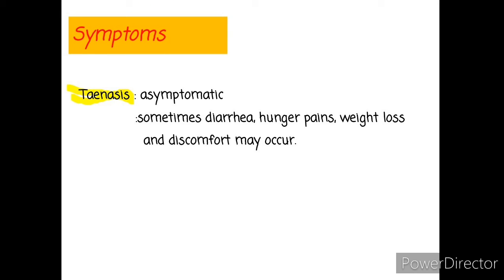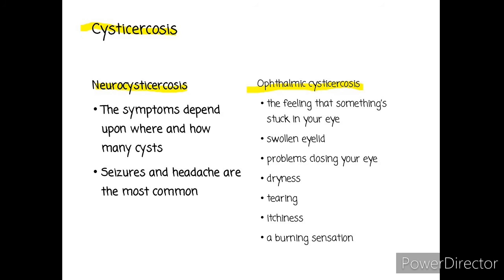Taeniasis is usually asymptomatic, but sometimes diarrhea, hunger pains, weight loss, and discomfort may occur. The symptoms of neurocysticercosis depend upon where and how many cysts are present, but the most common symptoms are seizures and headache.